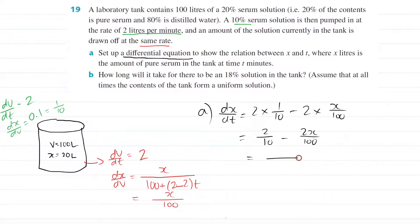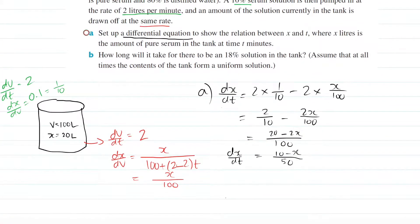So if you make them have the same common denominator, this times 10, 20 subtract 2x, and you should end up with 10 minus x divided by 50 if you simplify. So that's dx/dt, which isn't too bad. So that solves part A.